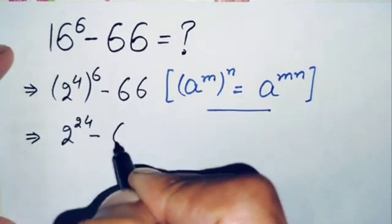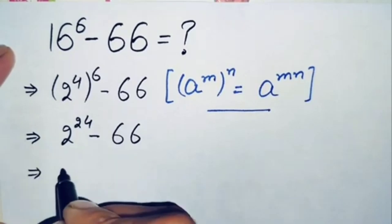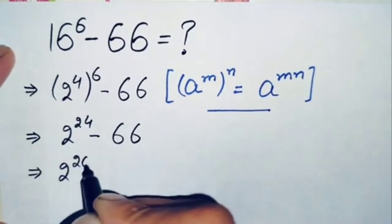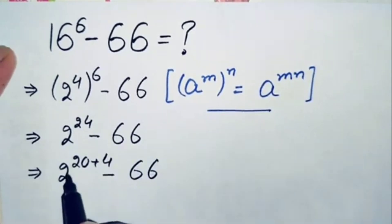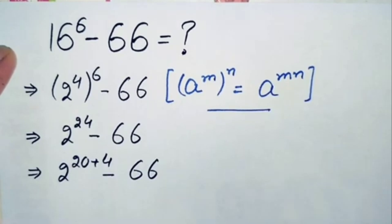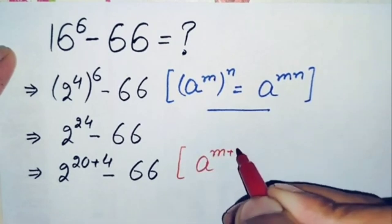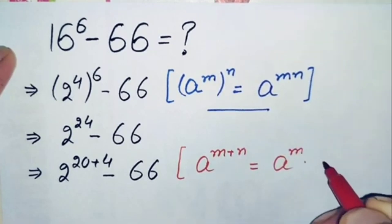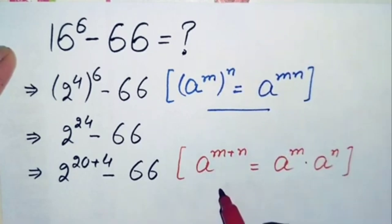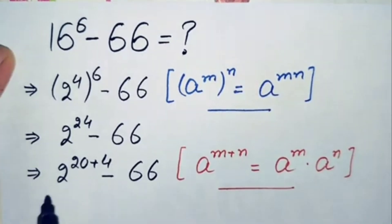Next we can write this power 24 as 20 plus 4. Now here we will use another exponential math property: a raised to power m plus n, which can also be written as a raised to power m times a raised to power n. Using this property we will split the powers over 2.